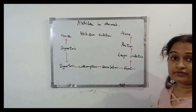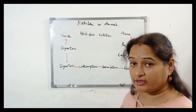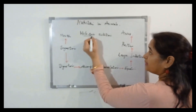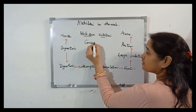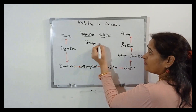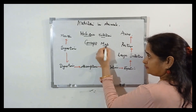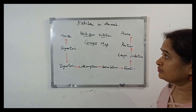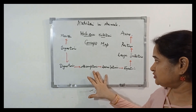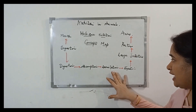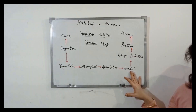I will start with the concept map of holozoic nutrition. Holozoic nutrition covers 5 steps: ingestion, digestion, absorption, assimilation, and egestion.